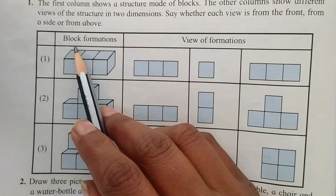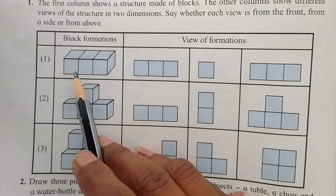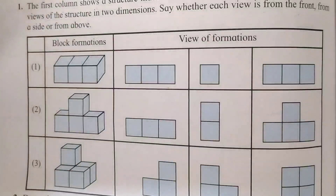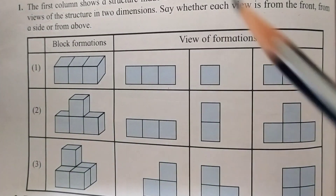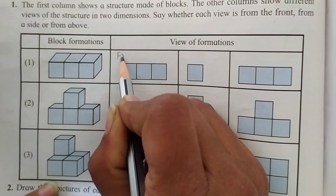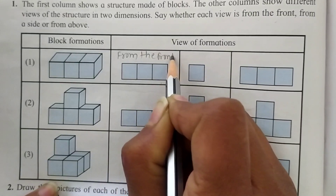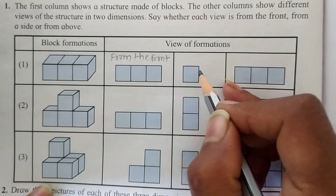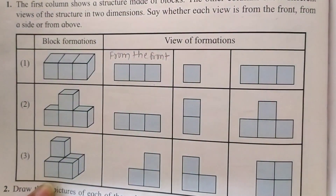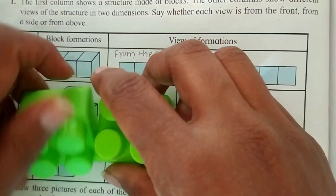Using the block information, we observe the first view. When we observe this structure, we find that this view is from the front. So right here: from the front.